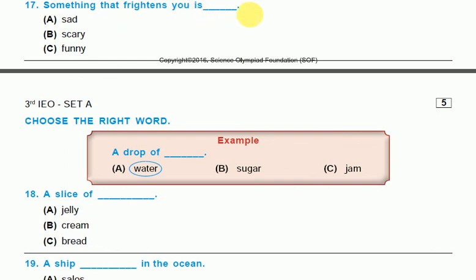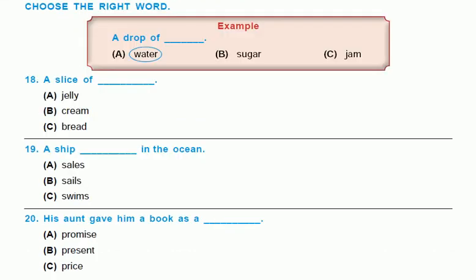Questions 18 to 20. Choose the right word. A drop of water, sugar, or jam. The answer is water. A slice of jelly, cream, or bread. A slice of bread. A ship in the ocean: sails, swims. Sails. His aunt gave him a book as a promise, present, or price. So his aunt gave him a book as a present.